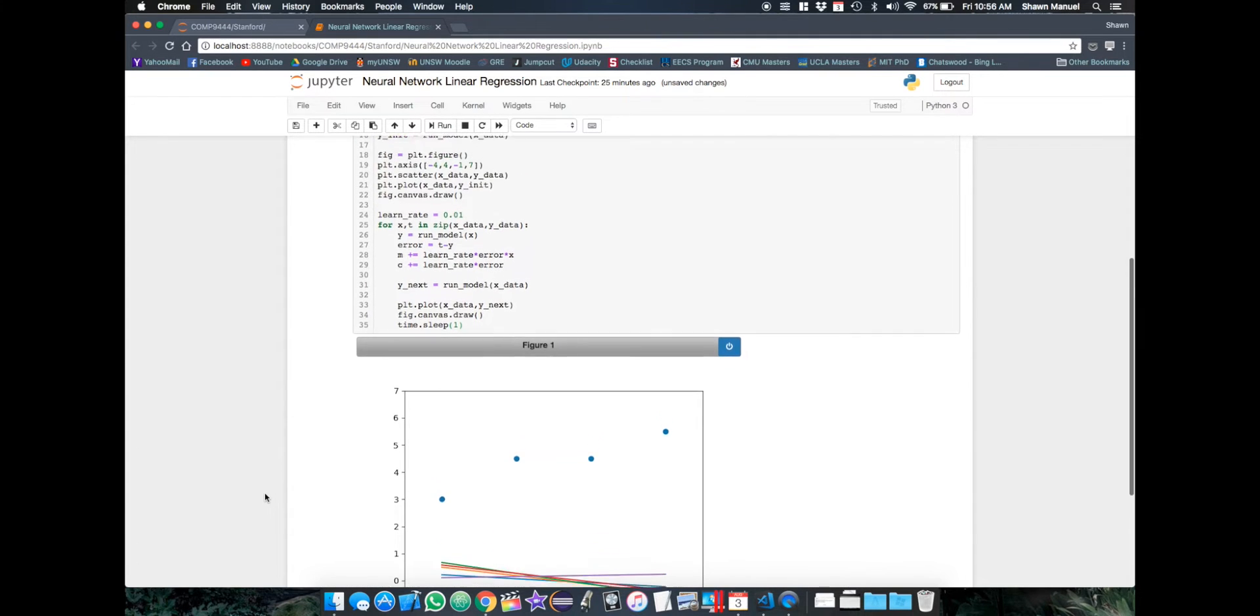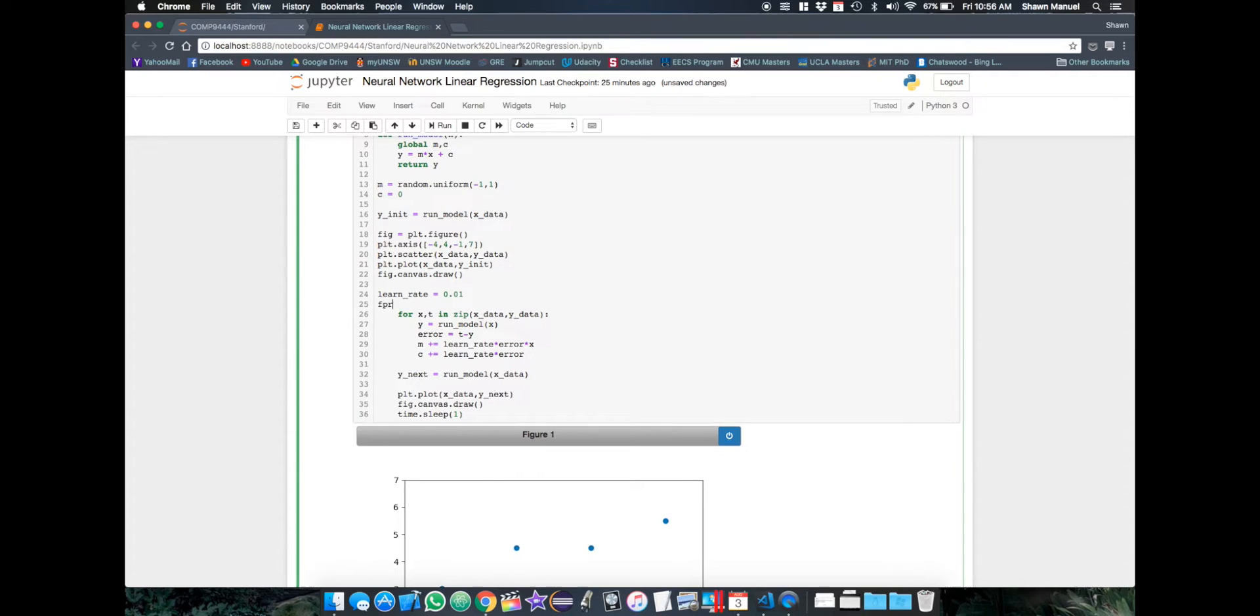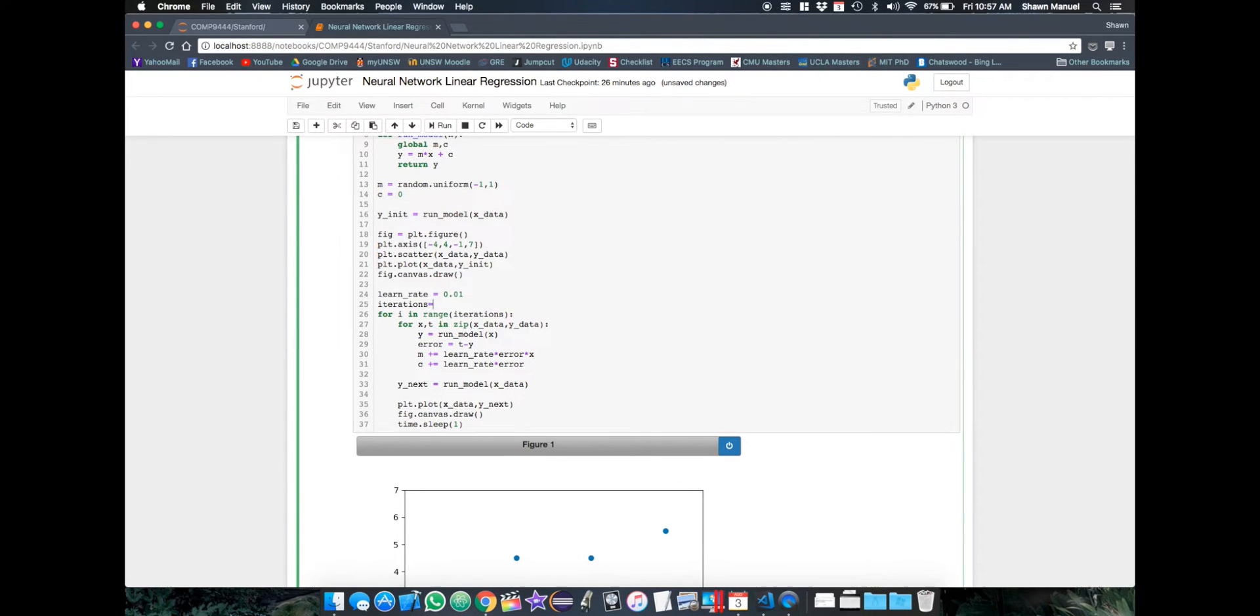But we'll need to keep training it for more iterations to eventually converge to the optimal model. So let's go for 100 iterations and this time we'll only show the most recent line and also reduce the delay to 0.1 seconds so that we can see it faster. And we'll display the final model.